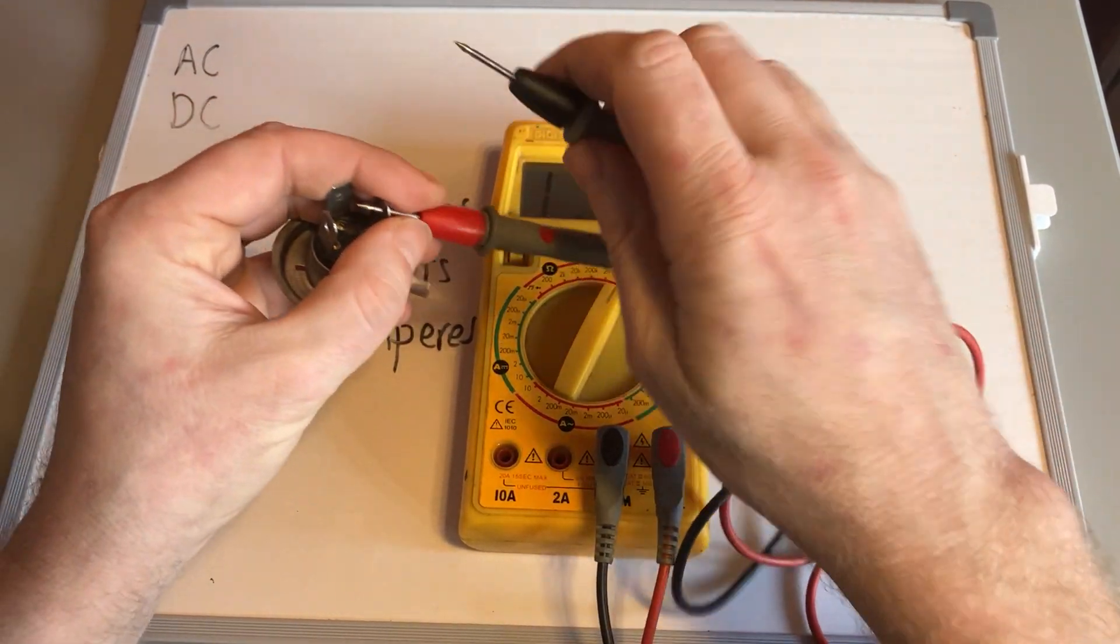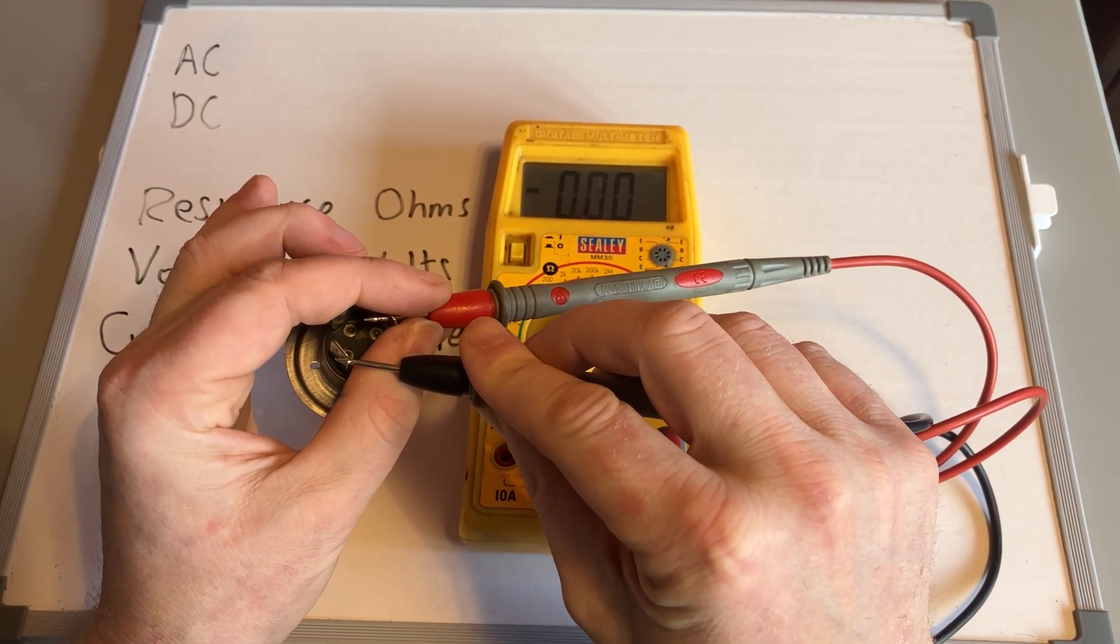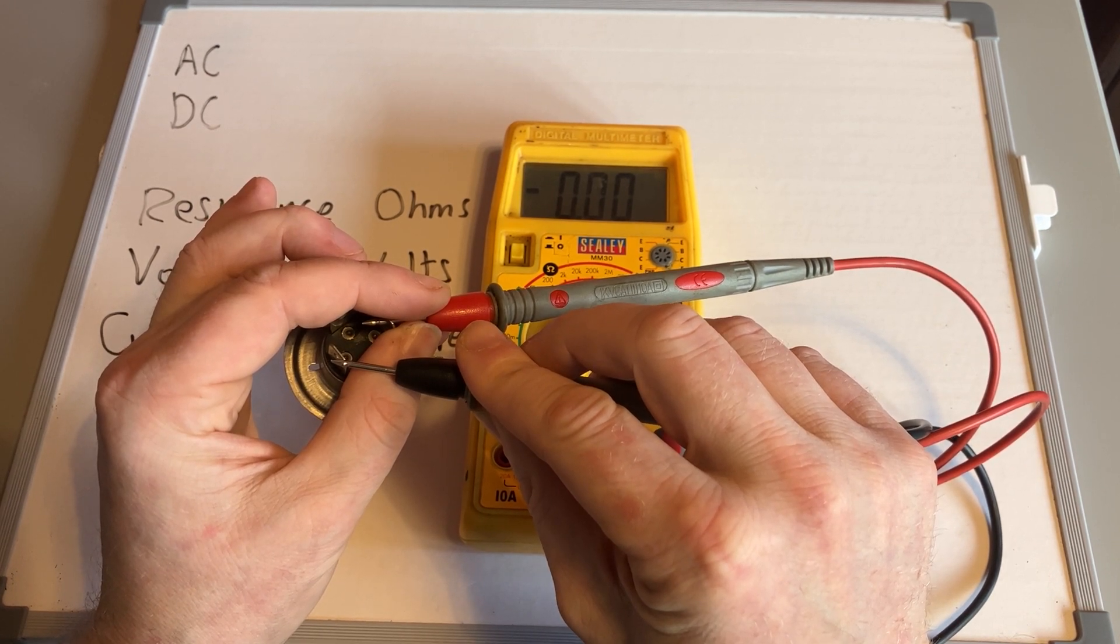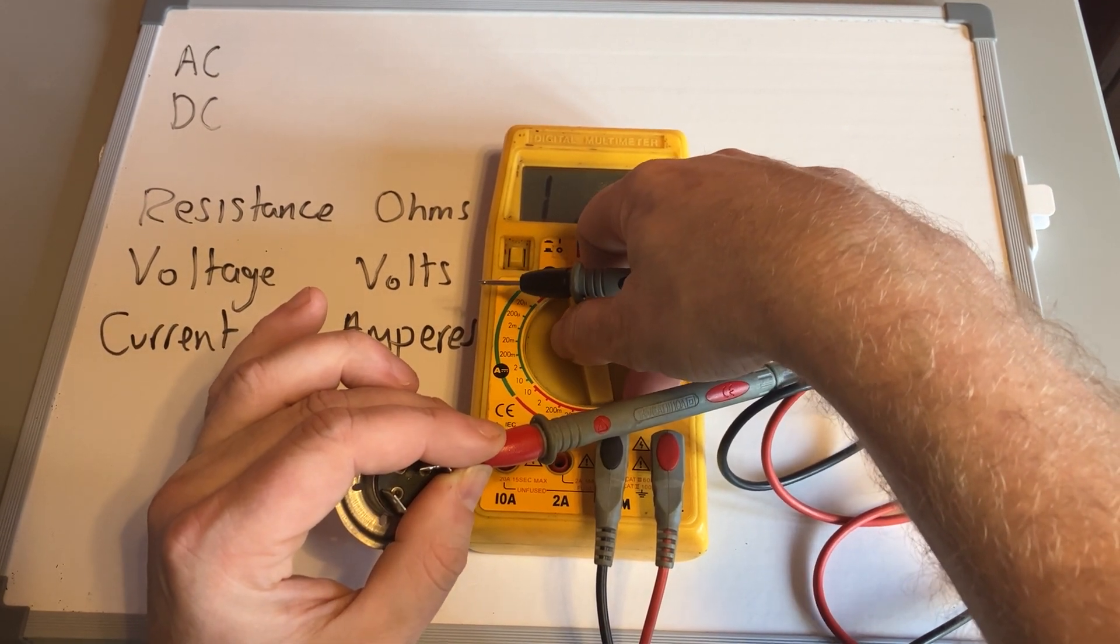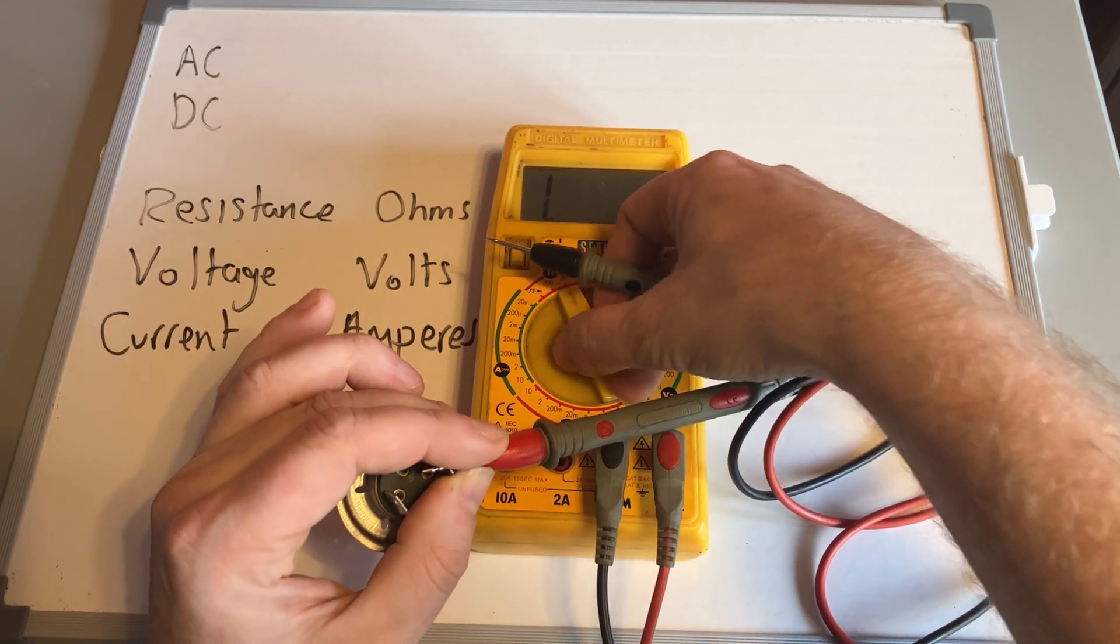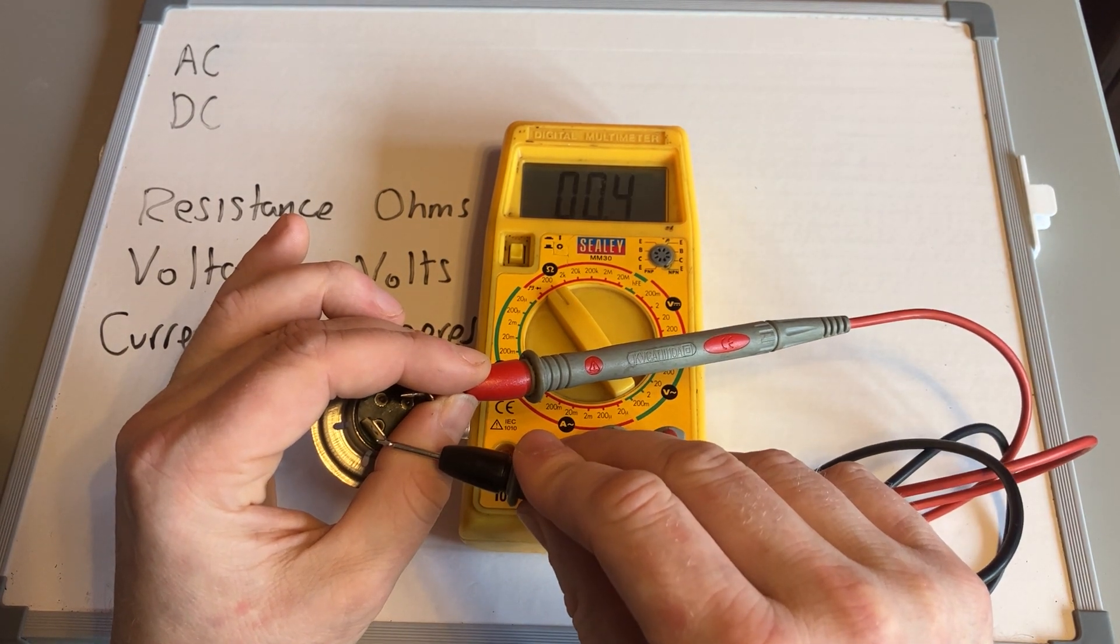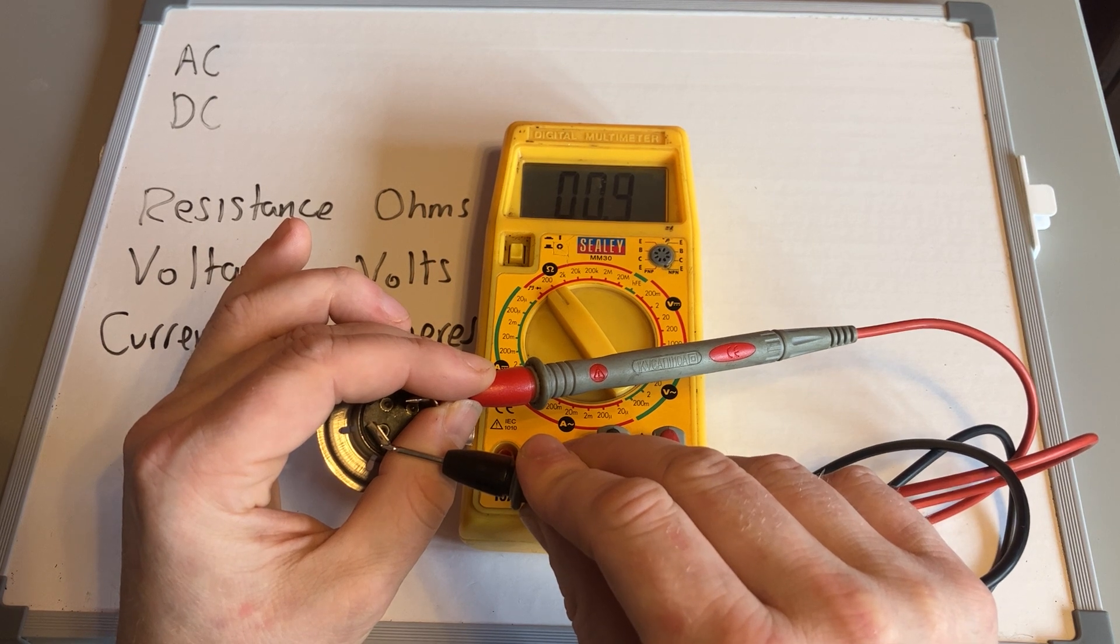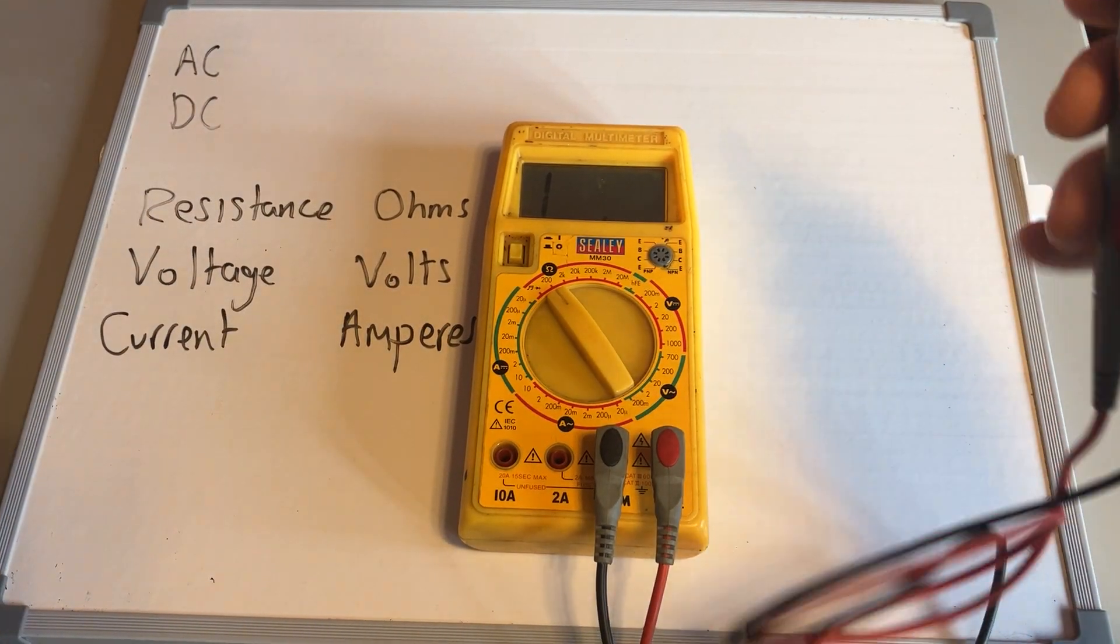If I use this halogen bulb as an example and put my two leads across it, I'll get zero. That's telling me that the circuit is actually complete, but it can't give me a reading because I'm not on the right setting. So I would then drop down my multimeter until I get a reading that I want. Again, if you're not sure, just do it one at a time and you'll keep getting zeros. For me, I know it's not going to be high resistance in a small bulb like this, so I'll put it on the lowest setting. Then it will give me a reading of how much resistance is lost through the wiring within this bulb.